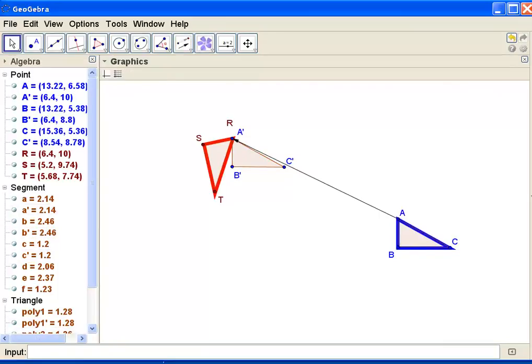The translated triangle is triangle A prime, B prime, C prime. A prime and R are the same point.